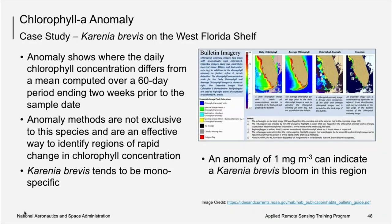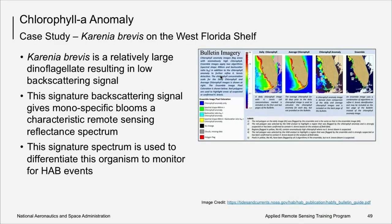Chlorophyll A anomaly is the difference between a chlorophyll concentration on a particular day and a mean chlorophyll concentration over a particular length of time. The NOAA HAB Bulletin for the west coast of Florida in the US is an example of a warning system that uses the chlorophyll A anomaly to indicate bloom conditions. In this case, the anomaly shows where the daily chlorophyll concentration differs from a mean computed over a 60-day period ending two weeks prior to the sample date. Anomaly methods are not exclusive to this particular organism. They can be used to identify and track blooms of different algal groups in different regions of the world. The HAB Bulletin model further confirms if the bloom is Karenia brevis by taking advantage of some of the optical properties or IOPs unique to the species in this environment. We will talk more about this bulletin in week three.